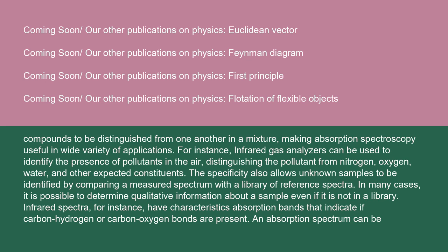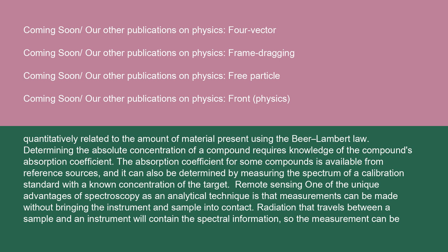An absorption spectrum can be quantitatively related to the amount of material present using the Beer-Lambert law. Determining the absolute concentration of a compound requires knowledge of the compound's absorption coefficient. The absorption coefficient for some compounds is available from reference sources, and it can also be determined by measuring the spectrum of a calibration standard with a known concentration of the target.